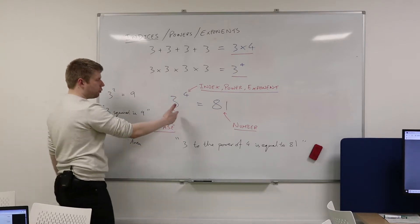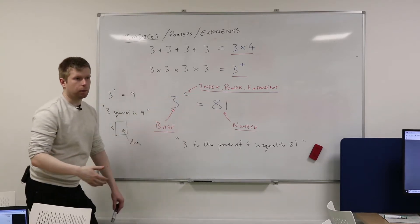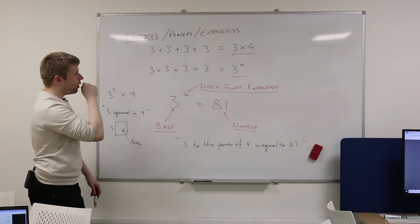So when we're squaring something, we're looking at the area, which is why we say squared and not to the power of 2. Whereas this, in general, we would say 3 to the power of 4 equals 81.